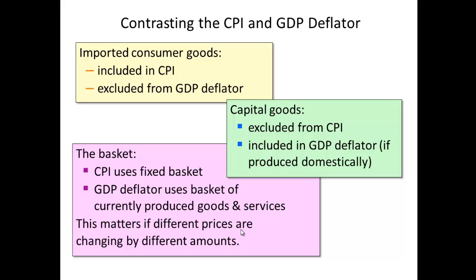First and foremost, consider imported consumer goods. If you are buying something made in China, Mexico, Guatemala, or Honduras, those goods and services would be included in CPI but would not necessarily be included in GDP or the GDP deflator. Additionally, capital goods — goods bought by businesses — are not included in CPI because CPI is based on the typical household, and typical households do not buy capital goods. But capital goods would be included in GDP because they were produced domestically.